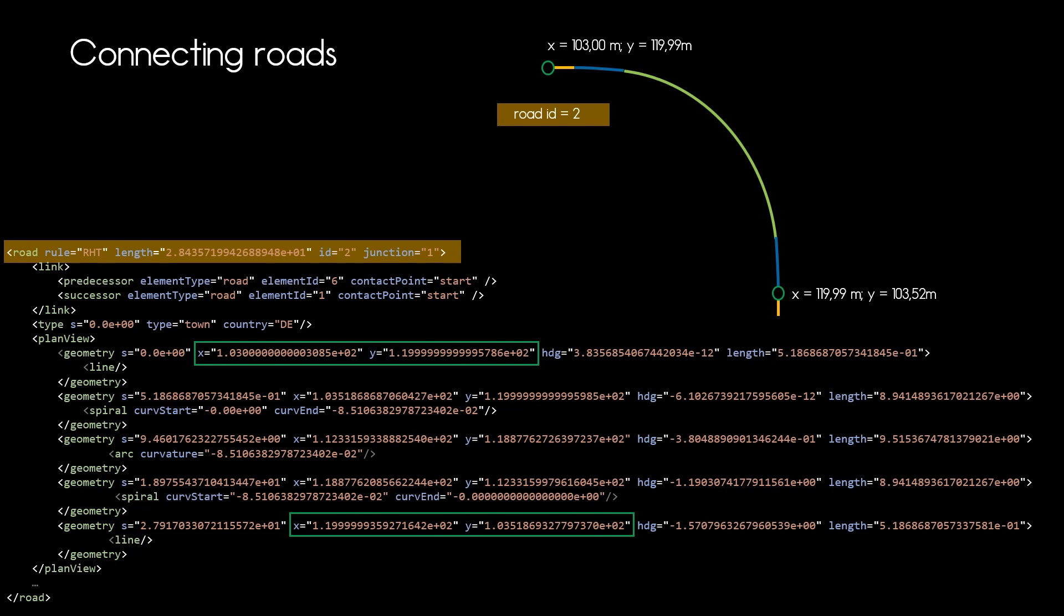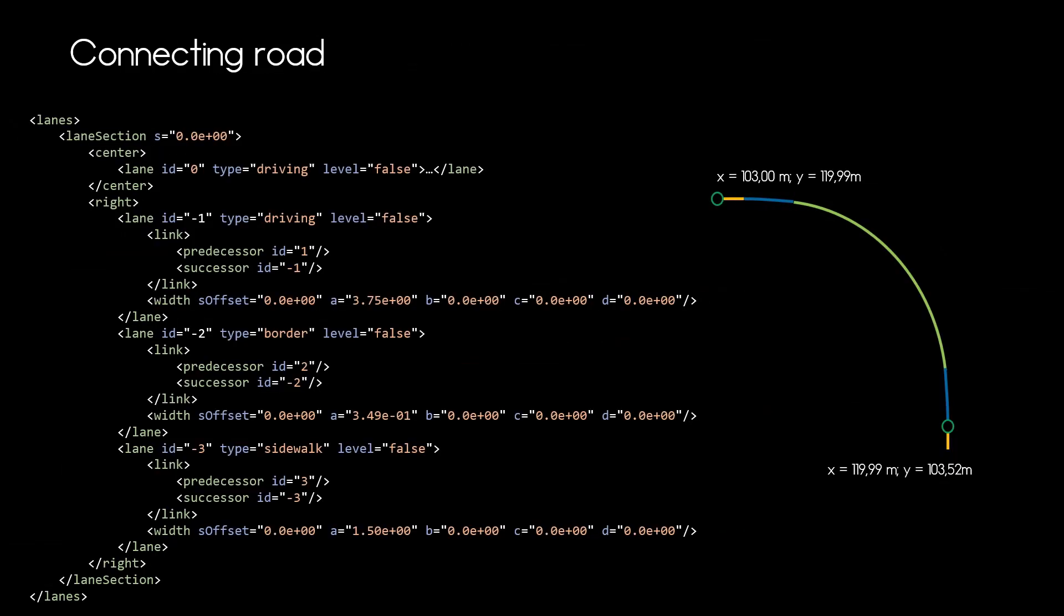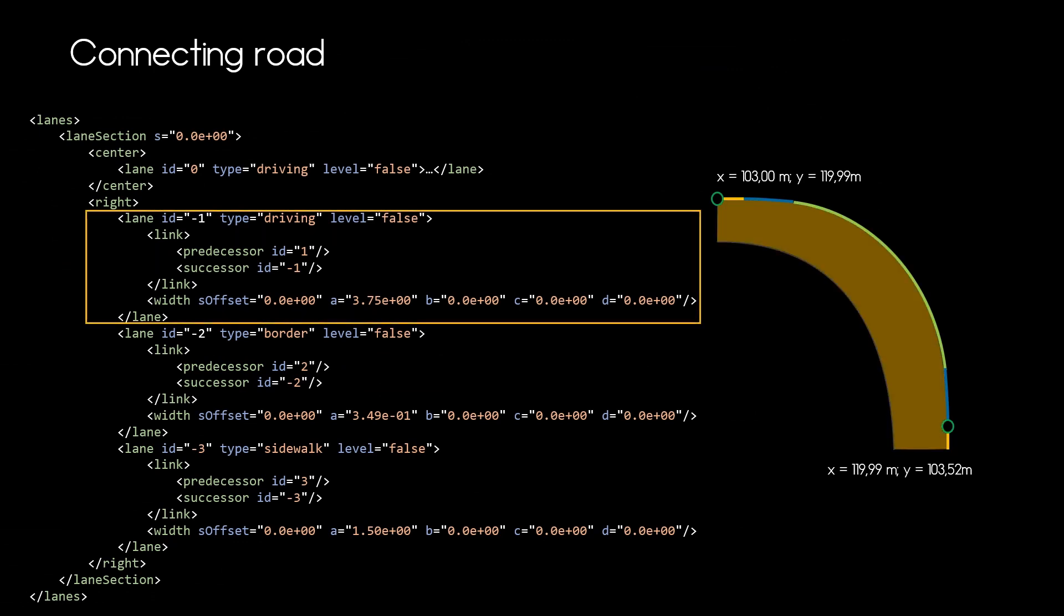So as we now have this reference line, we can now start to attach lanes to it. So let's do that. These are the lanes we want to attach. First the driving lane. Check out my video about lanes to learn more about how lanes work in OpenDrive.